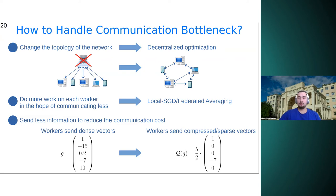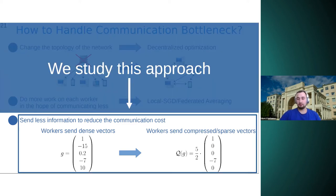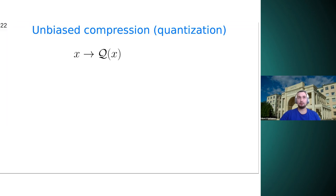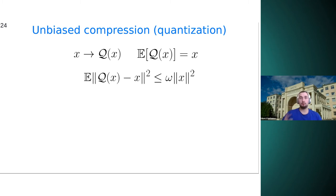And before we introduce classical methods, we need to introduce the definition of unbiased compression, or sometimes it's called quantization. So it is basically just stochastic operator Q, and it's unbiased stochastic mapping. So expectation of Q of X is X. And it has relatively bounded variance. So the variance is bounded by some factor omega times the squared norm of the input vector X.